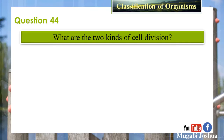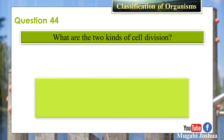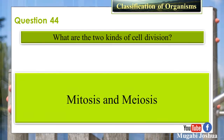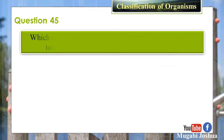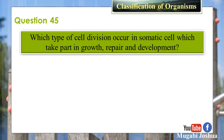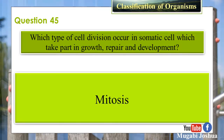Question 44: What are the two kinds of cell division? Answer: Mitosis and meiosis. Question 45: Which type of cell division occurs in somatic cells, which take part in growth, repair, and development? Answer: Mitosis.